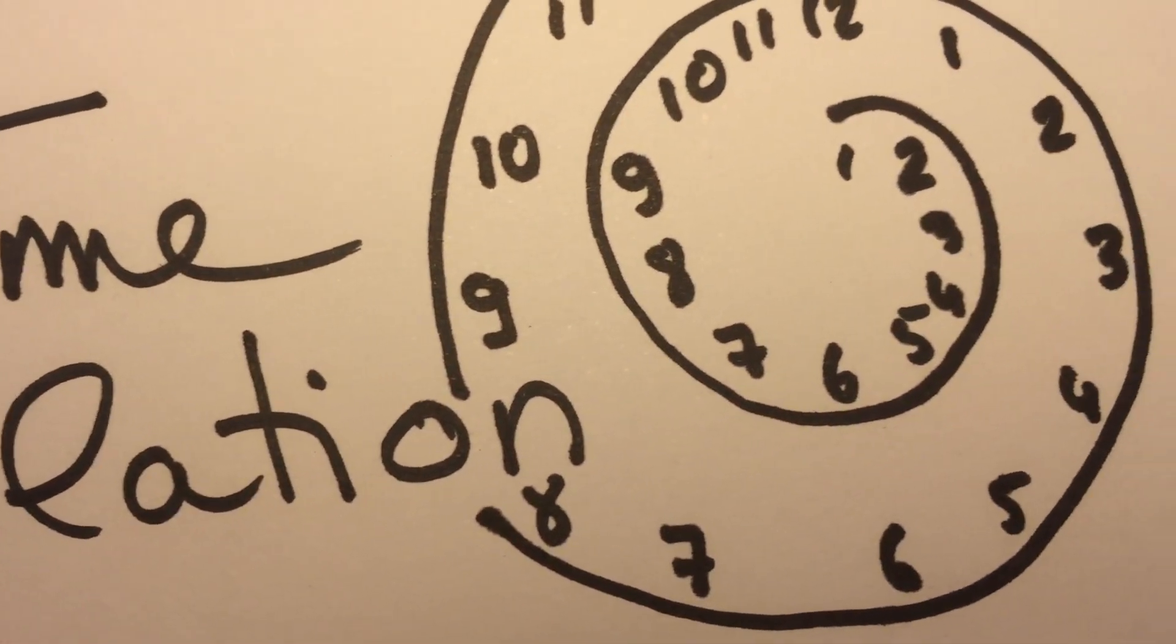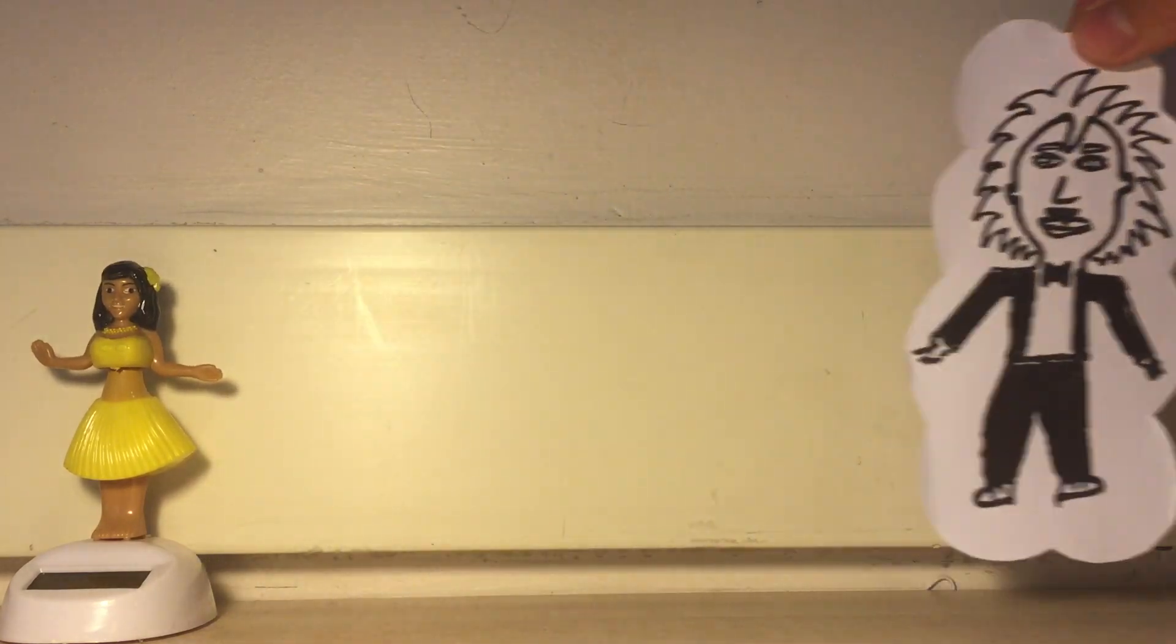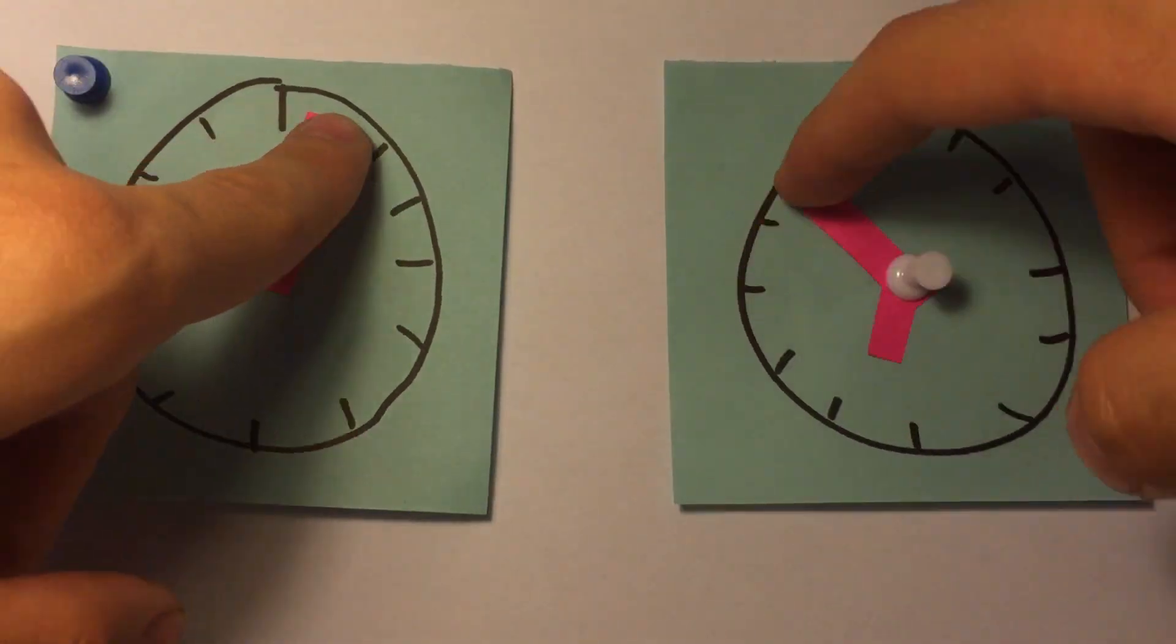Time dilation, a particular aspect of that theory which I'm gonna focus on, says that when two objects are in relative movement, time runs in different speeds for each.